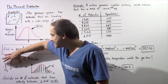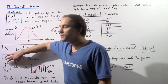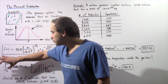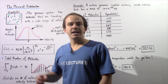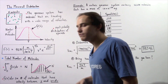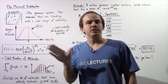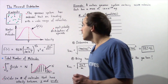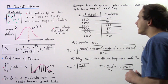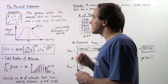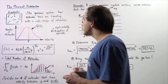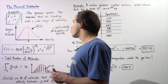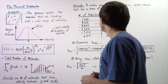The product f(v) · dv equals the number of molecules that have a velocity ranging between v and v + dv. Now let's look at an example in which we'll use the Maxwell distribution to determine the RMS velocity as well as the temperature of our gaseous system.